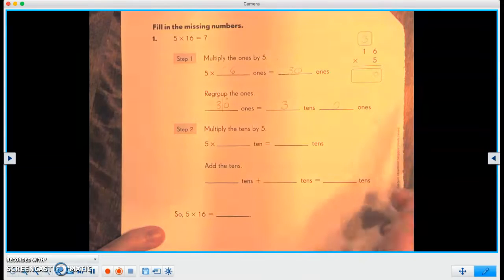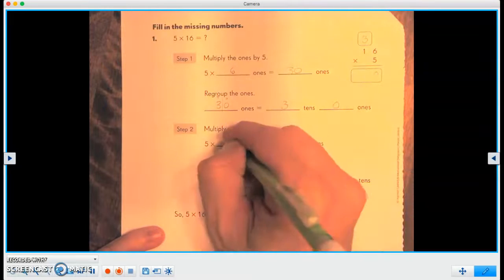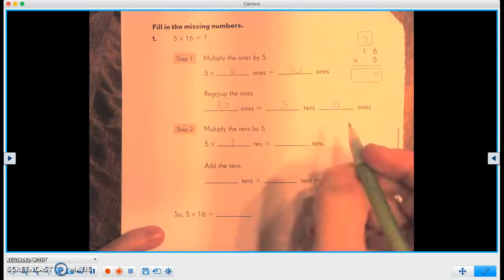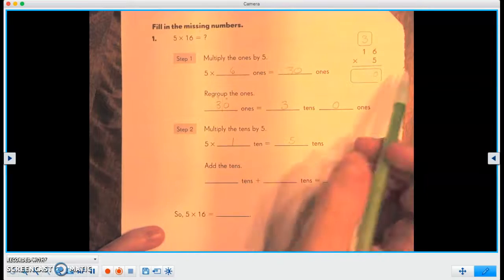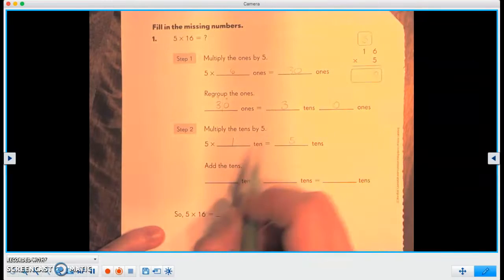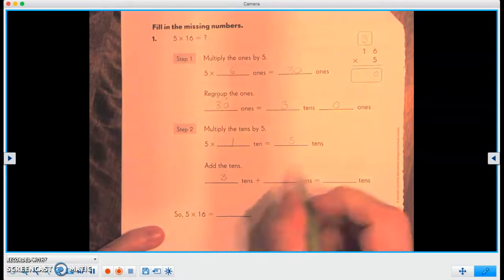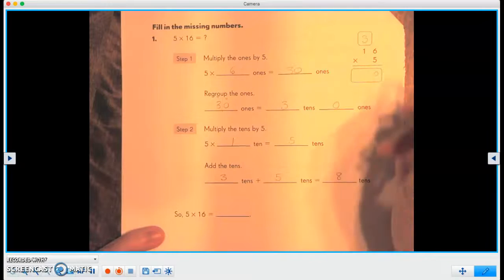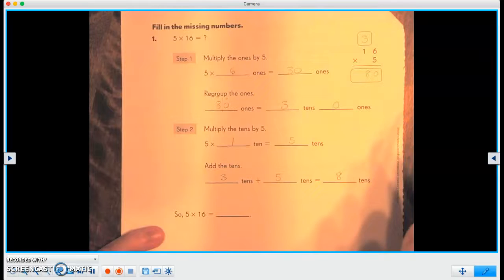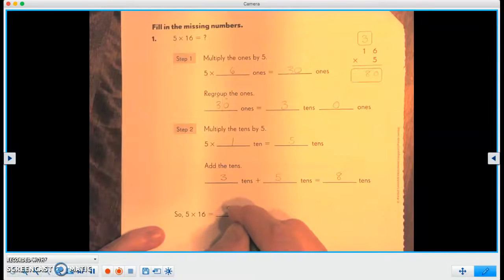Now we're going to multiply the tens by five. So there's one ten, and we multiply that by five, and that equals five tens. Now we're going to add our tens together. So there's the three tens that we had regrouped, plus the five tens. And we're adding them, so three plus five equals eight tens. Therefore, our answer of five times 16 equals 80.